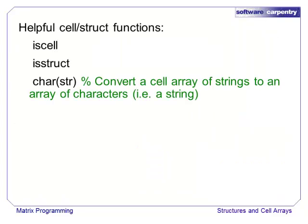There are several functions that will help you navigate between cell arrays, structs, and strings. isCell and isStruct are pretty obvious. The function char will flatten a cell array of strings into a regular array of characters. Earlier, we noted that an array of characters is just a string.